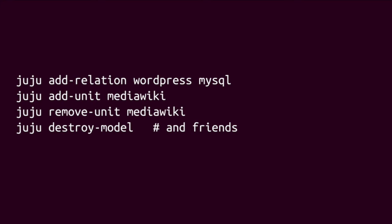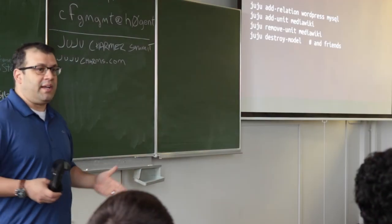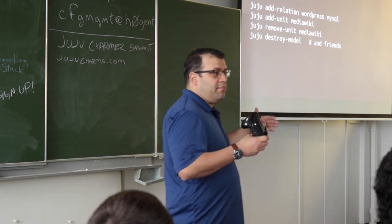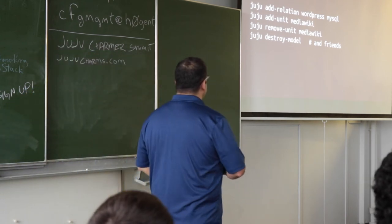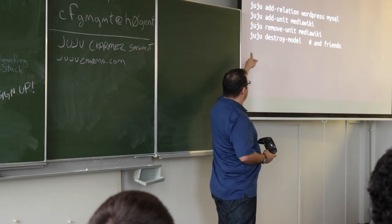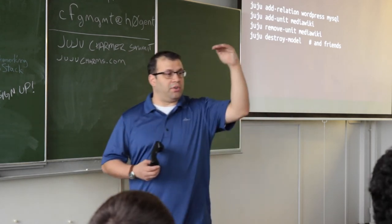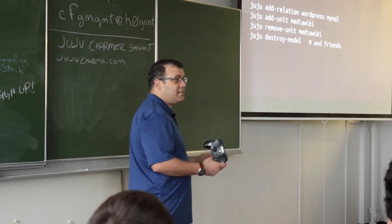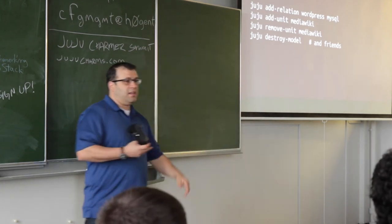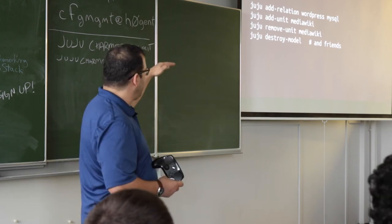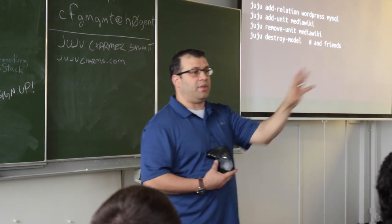Adding and removing units is how we do horizontal scalability, and we'll get into that later. By modeling at the application level, we kind of get horizontal scaling for free — if the database knows what to do every time MediaWiki needs to talk to it, we're really just incrementing a number. 'Juju destroy-model' is used when you want to clean up and start over — it has variants like destroy-units and destroy-services. Each command has a destroy equivalent for cleaning up the model.